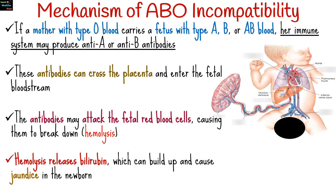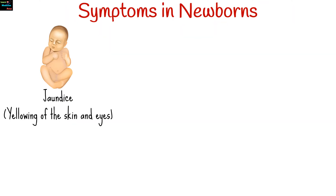Hemolysis releases bilirubin, which can build up and cause jaundice in the newborn. Symptoms in newborns include jaundice — the yellowing of the skin and eyes — due to high bilirubin levels.